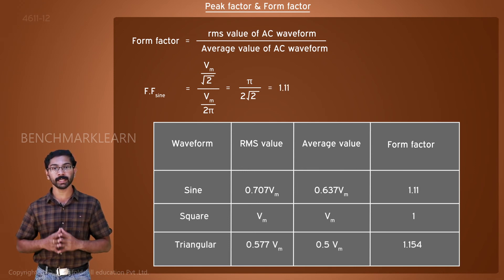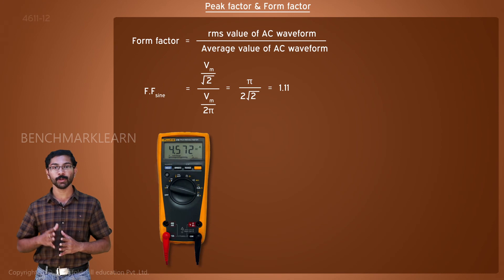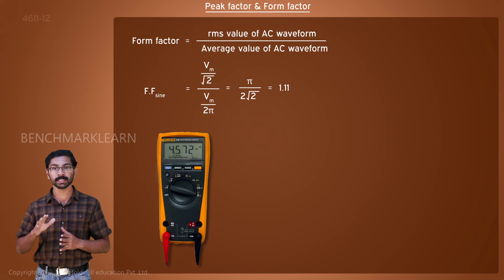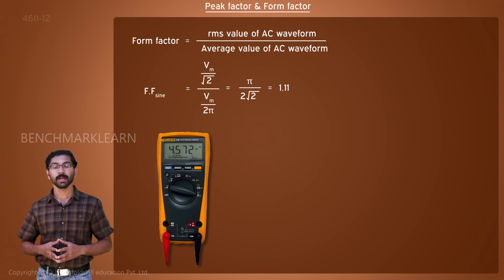The value of form factor is unique to a waveform. Form factor is used in digital multimeters to find the RMS value of a voltage or current. The actual calculation of RMS value needs complex circuitry in digital meters, so most multimeters calculate the average value of the waveform using simpler circuitry and multiply it with the form factor of a sine wave to get the RMS value.